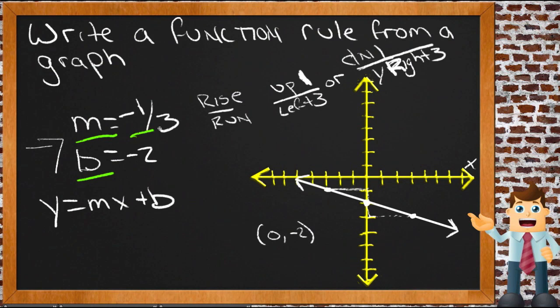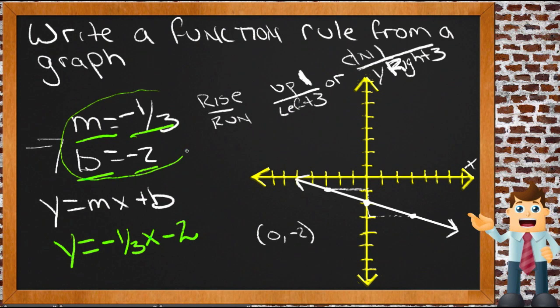So we can just take the values that we have for those two things, negative one-third and negative two, and put them into our standard form. And we'll get y equals negative one-third x minus two, because we're doing plus b, and b is a negative two, so we're subtracting two from it. So we've just substituted in the values we were given for m and b.